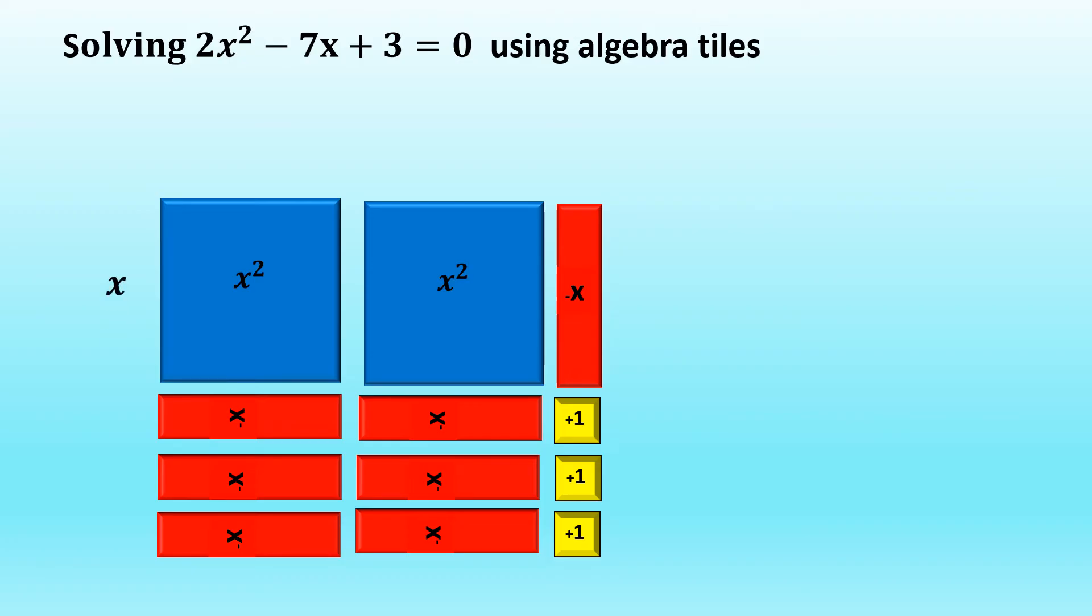So looking at the left side, we have x and we count the red tiles. That is negative 3. So it becomes x minus 3. Let's go to the top portion. We have 2 blue tiles. So we have x and x. We're going to add them. We have 2x and then we have the 1 red tile. It will become 2x minus 1.